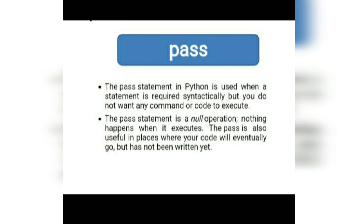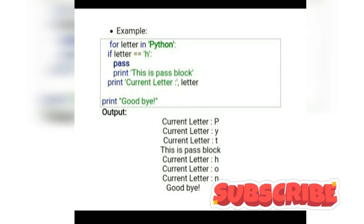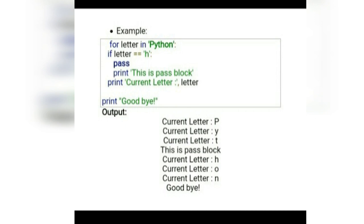The pass keyword is used when a statement is logically required but we do not want any code to execute. The pass statement is a null operation — nothing happens when it executes. Pass is also useful in places where your code will eventually go but has not been written yet. Just as in C and C++ we used empty curly braces with no statements, in the same way here the pass keyword works. In this example, when the condition letter equals h becomes true, the pass block executes and prints nothing. Now let's have a practical session to clear all doubts.